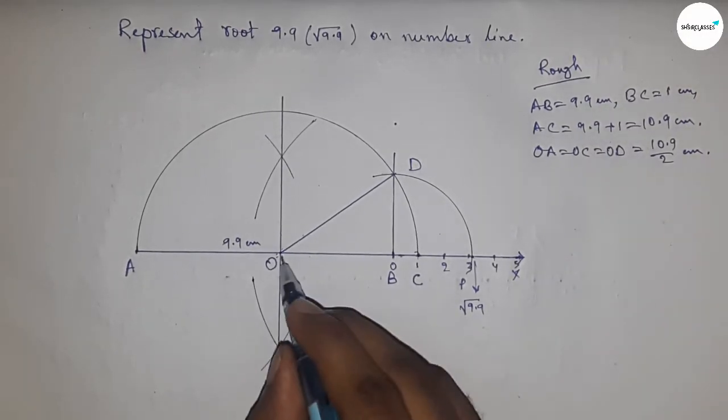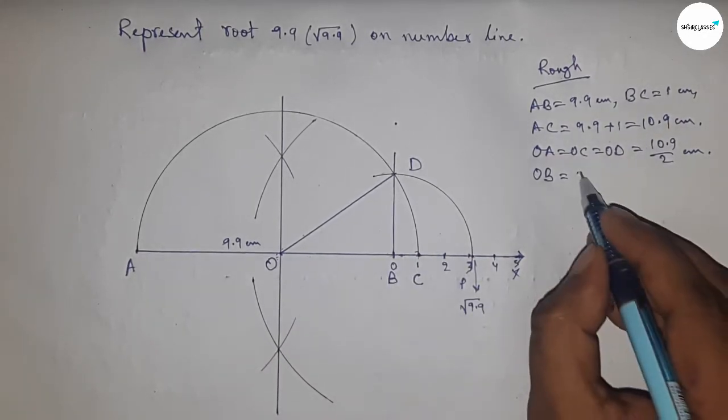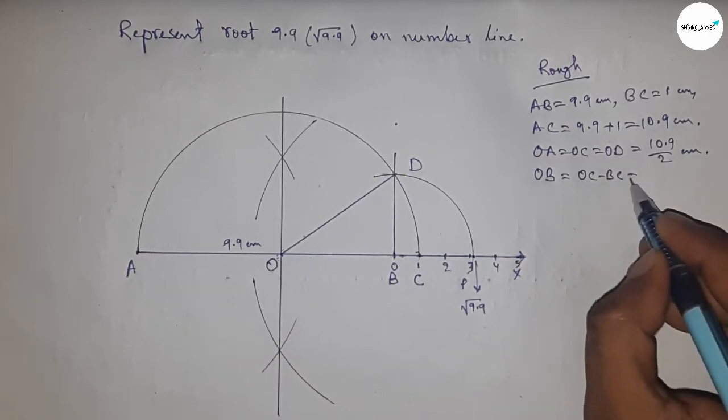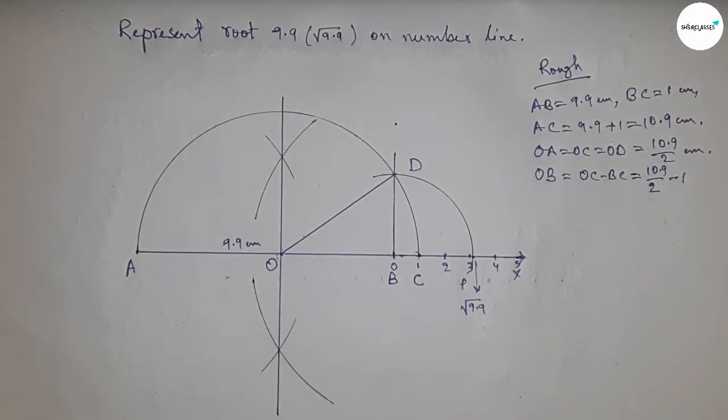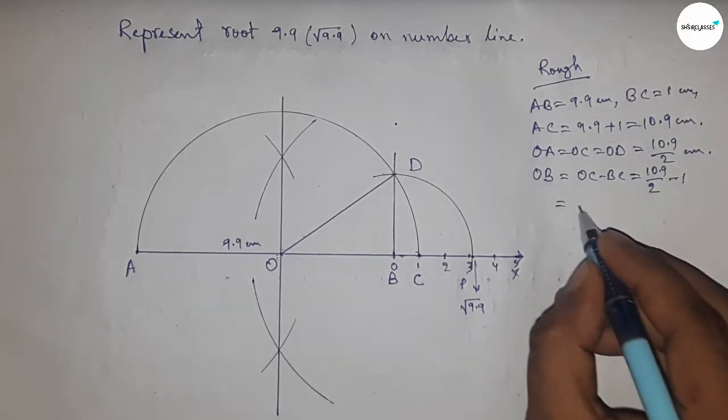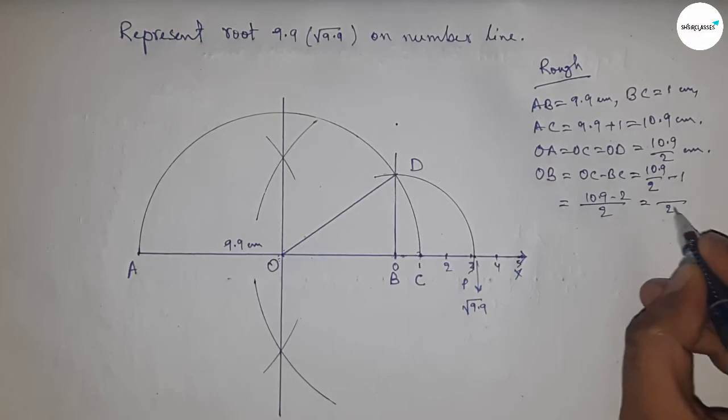Now distance OB equal to OC minus BC. Putting the value of OC and BC and calculating this, so this is 10.9 minus 2 equal to 8.9 by 2 centimeter.